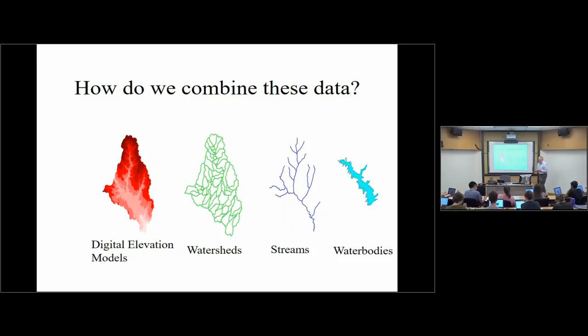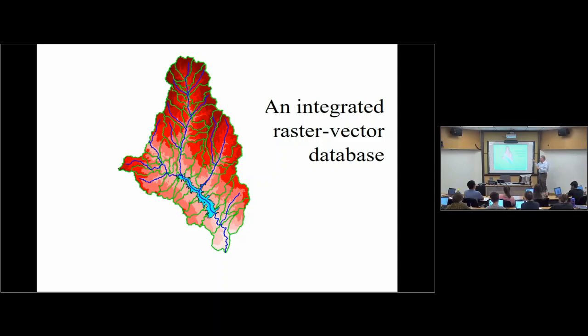The question becomes: how do we put all this together? We've got terrain, drainage areas, streams, water bodies. What we're really trying to do is restore the neighborliness — put this together and say now I really know what's going on. This stream goes into the top end of the lake, this is the drainage area that comes into this, and this is what the National Water Model uses for the whole country.